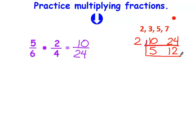They're not both even, so I can't use 2. 3 does not go into 5. They both do not end in 5 or 0, so I can't use 5. And 7 is bigger than 5. So this problem simplifies to 5 twelfths.